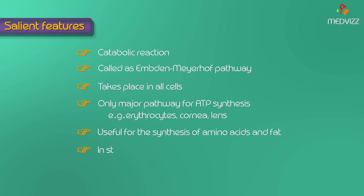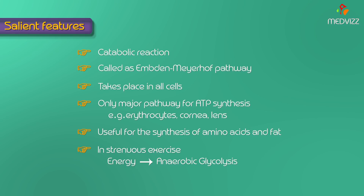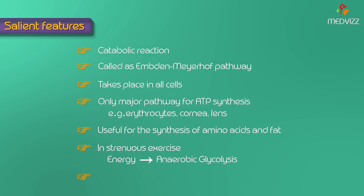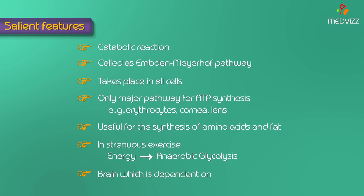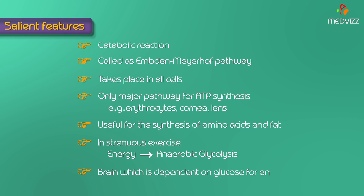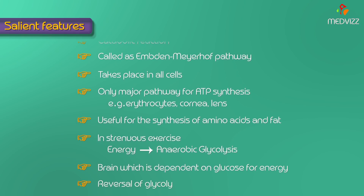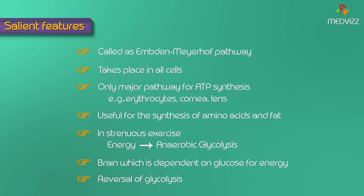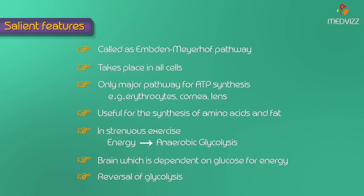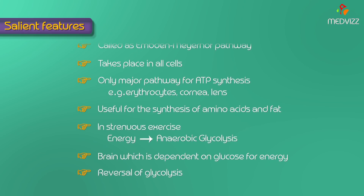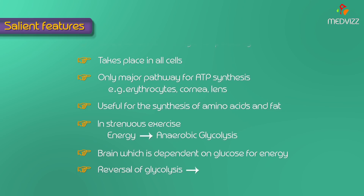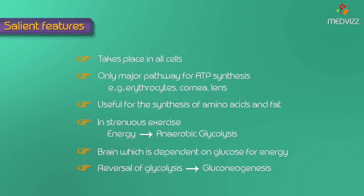In strenuous exercise, energy production is from anaerobic glycolysis due to the lack of oxygen in the muscle tissues. Glycolysis is very essential for the brain, which is dependent on glucose for energy. Reversal of glycolysis along with alternate arrangements at the irreversible steps results in the synthesis of glucose, which is called gluconeogenesis.